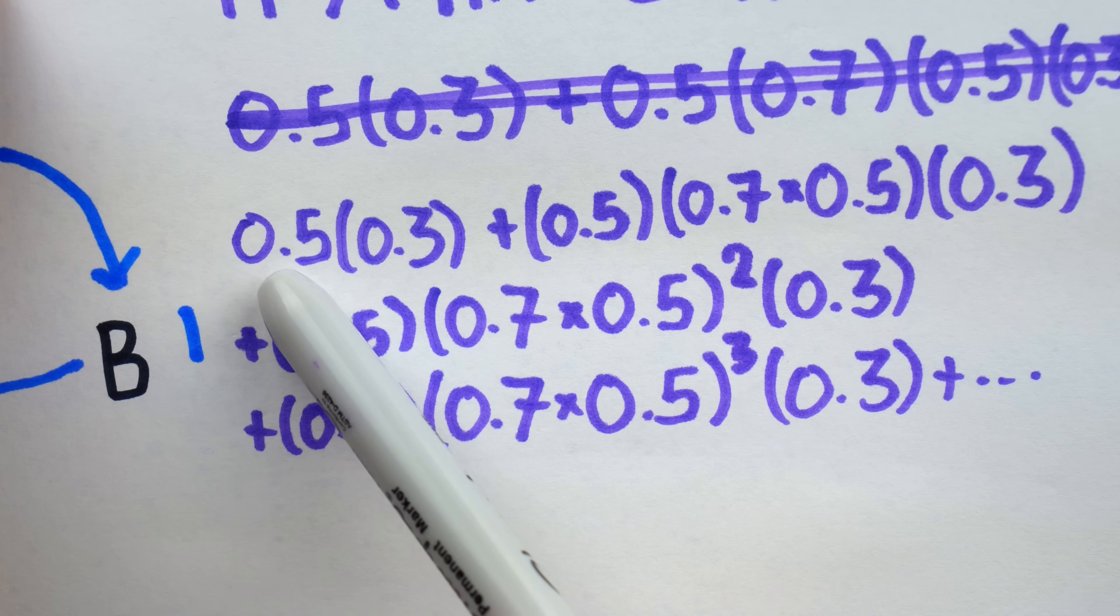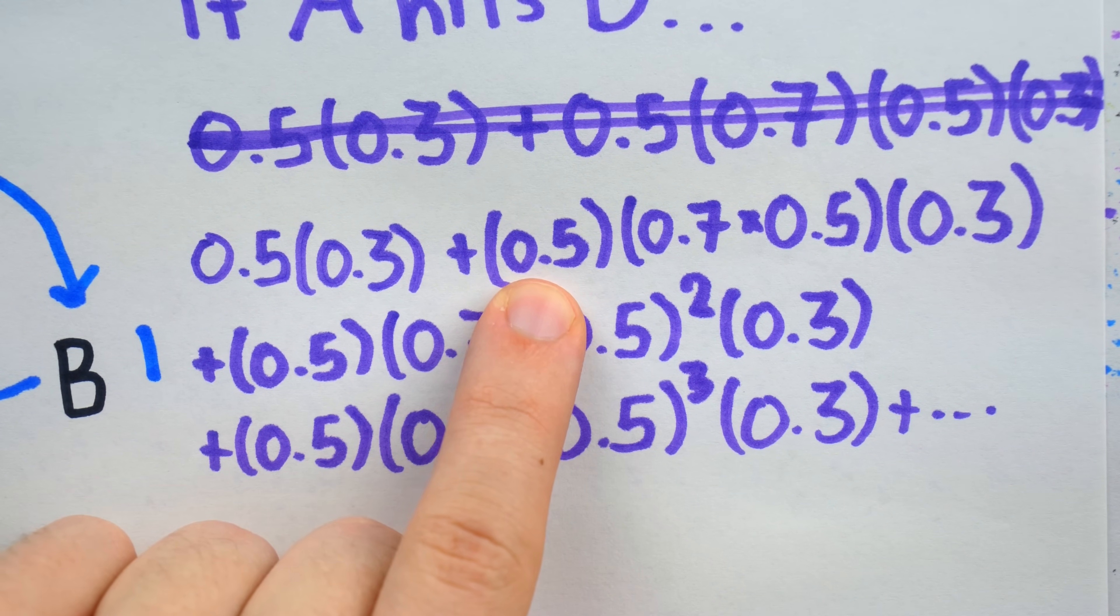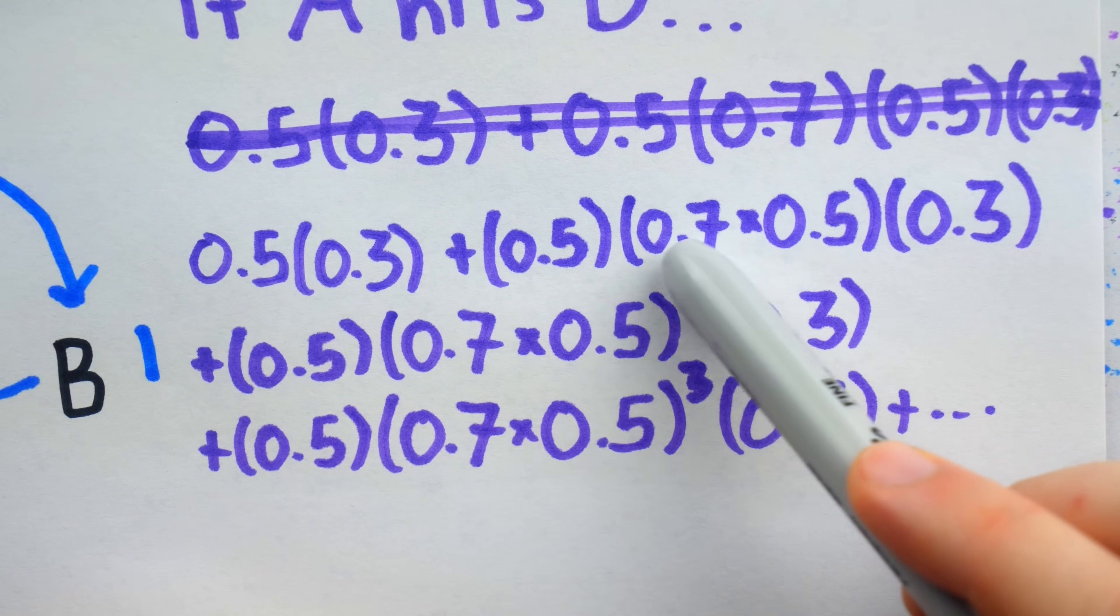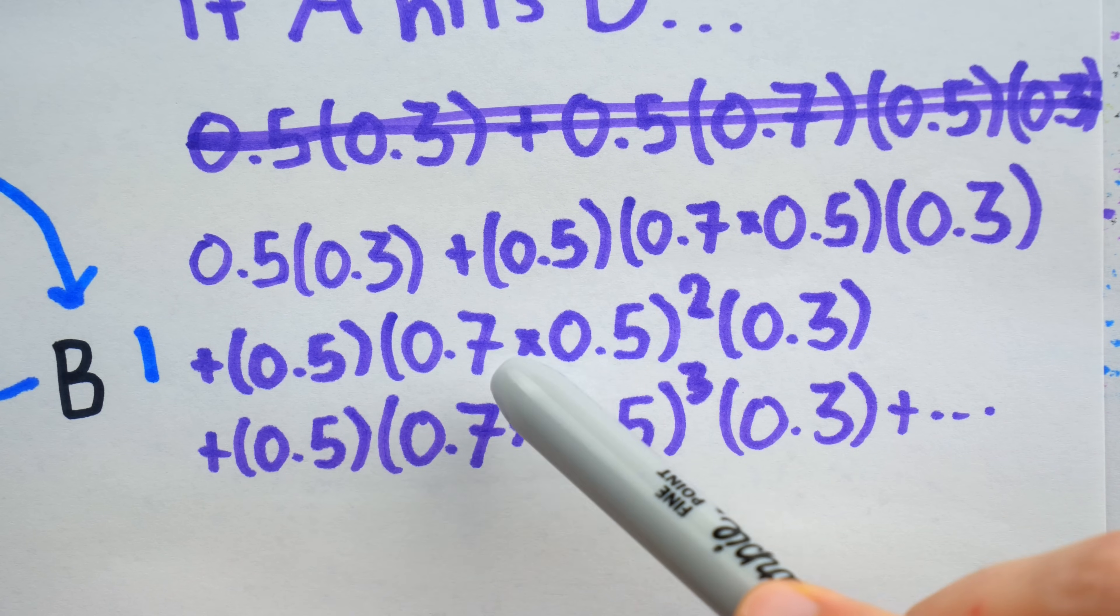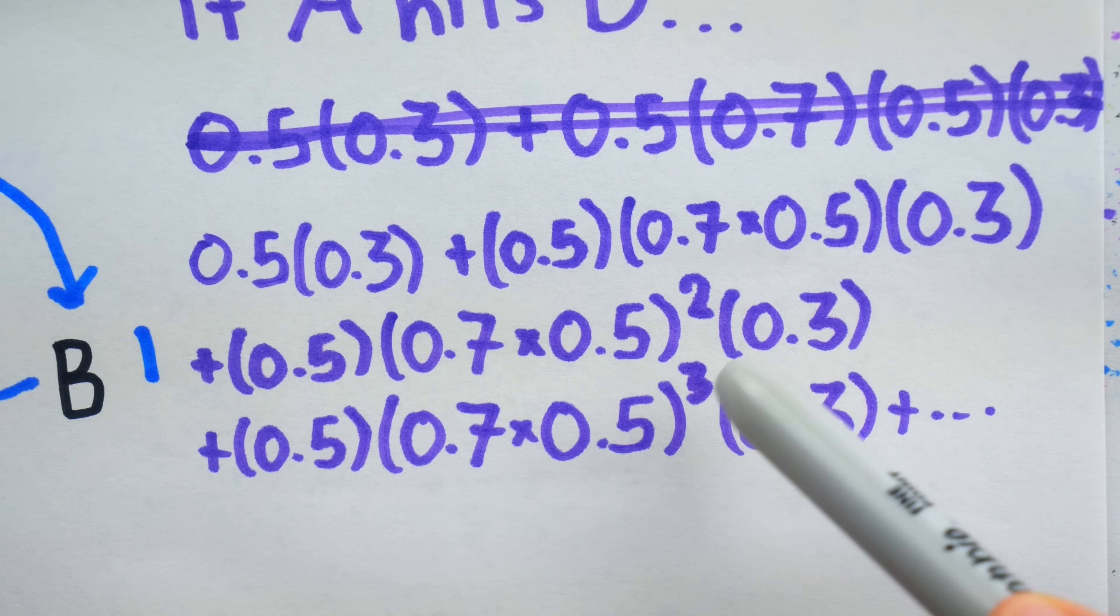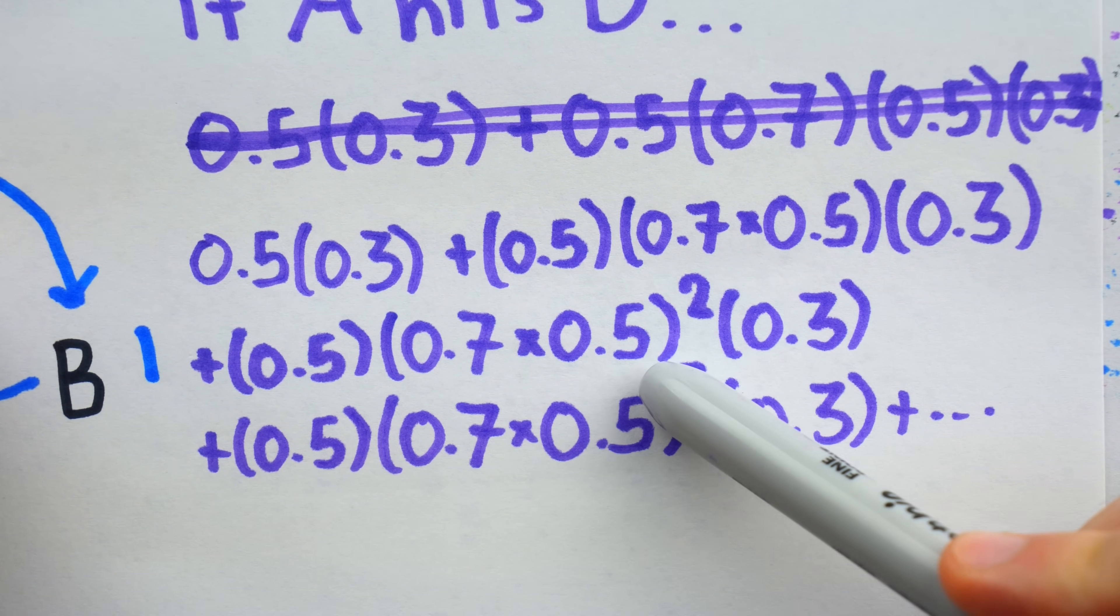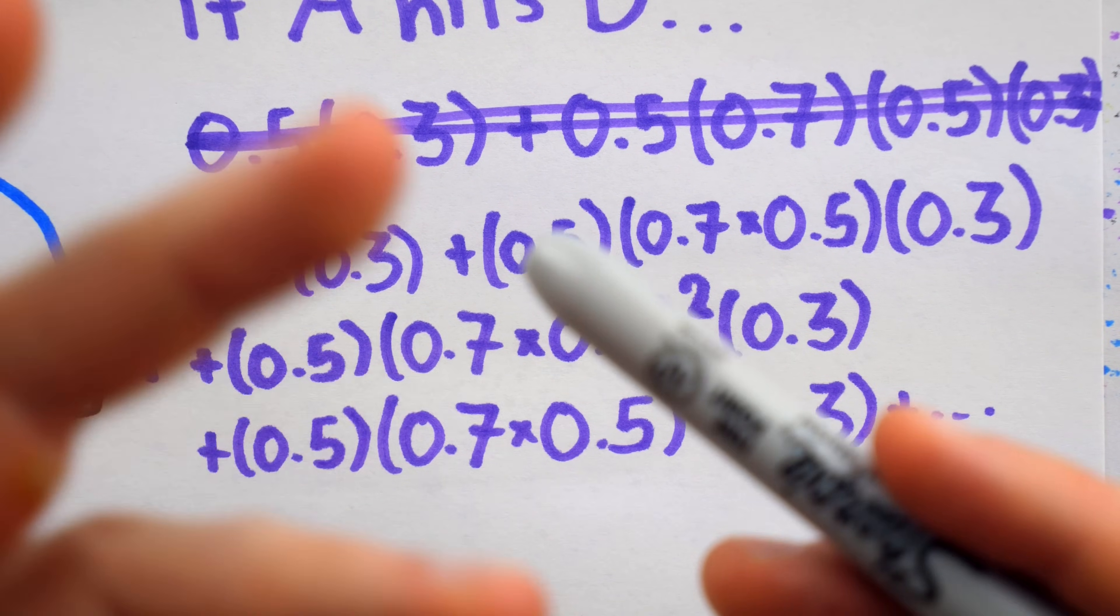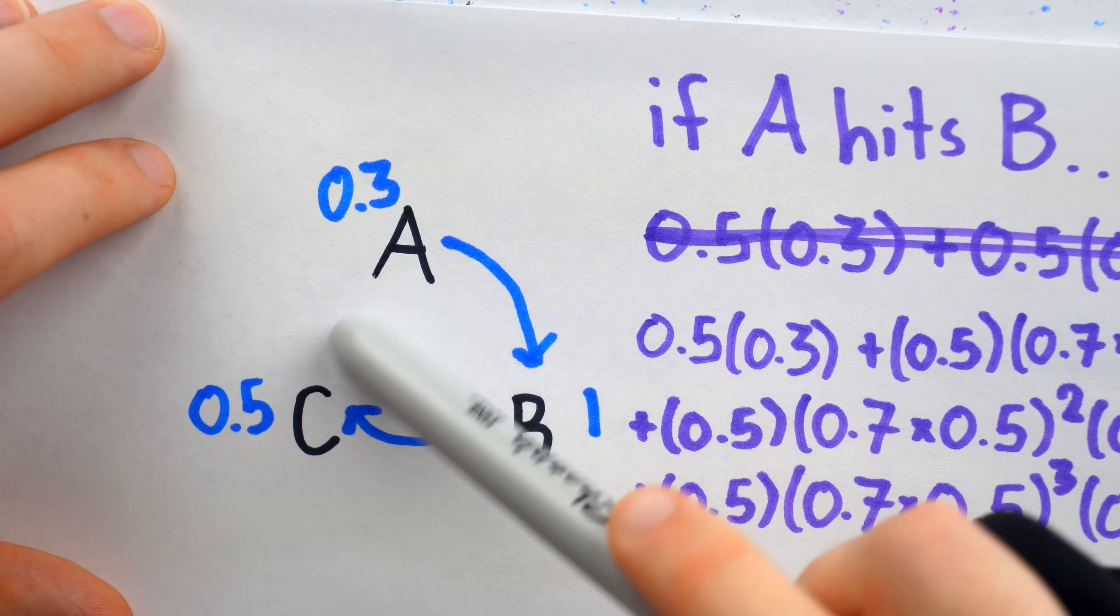Here are all the possible ways A could survive being added up. It could be that C misses, and then A makes his very first shot at C. However, it could be that between C's first miss, and A finally hitting C, they exchange misses. Or, they could exchange misses twice, which is why we see 0.7 times 0.5 squared here. Or, they could exchange misses three times. This, of course, would continue. This exponent could be anything, and we have to add up all of those terms, because those are all probabilities of events that could happen.